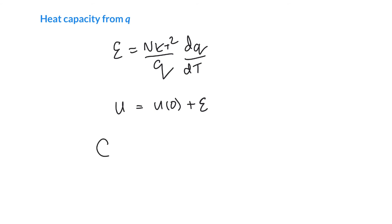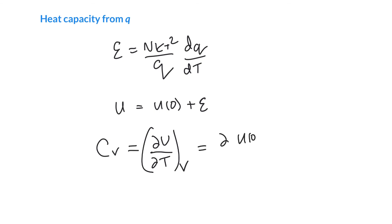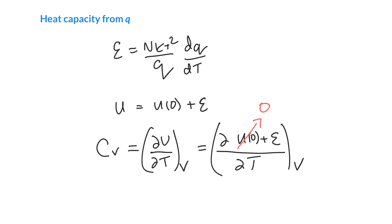We can also get heat capacities. The constant volume heat capacity C_V is the derivative of internal energy with respect to temperature at constant volume. Since the zero-point term is a constant, its derivative is zero, and the temperature-dependent term differentiates straightforwardly. We can calculate C_V from the partition function. For an ideal gas, C_P − C_V = R, so if we calculate C_V, we can find C_P as well.